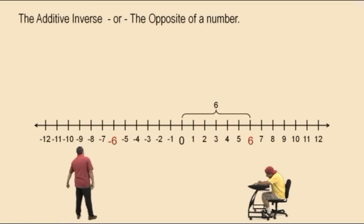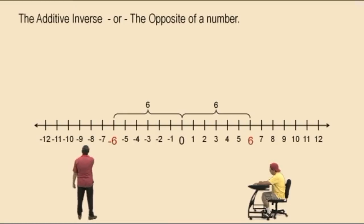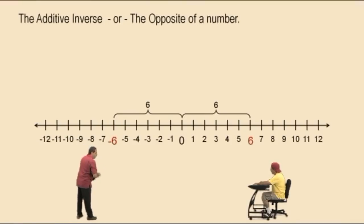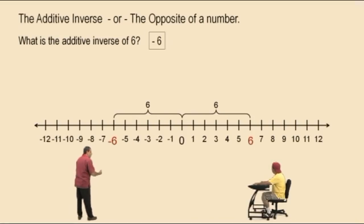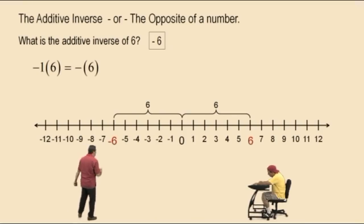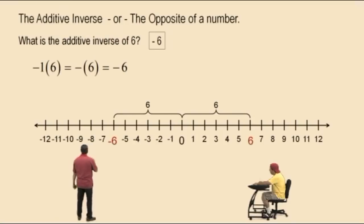Let's review. Notice here: how many units is 6 away from 0? 6! That's right. Similarly, negative 6 is also 6 units from 0. That's why they're opposites or additive inverses of each other — they're the same distance from 0 on either side of the number line. So the additive inverse of 6 is negative 6. We calculate it as negative 1 times 6, which is negative 6. And if you add negative 6 plus 6, you get a sum of 0.